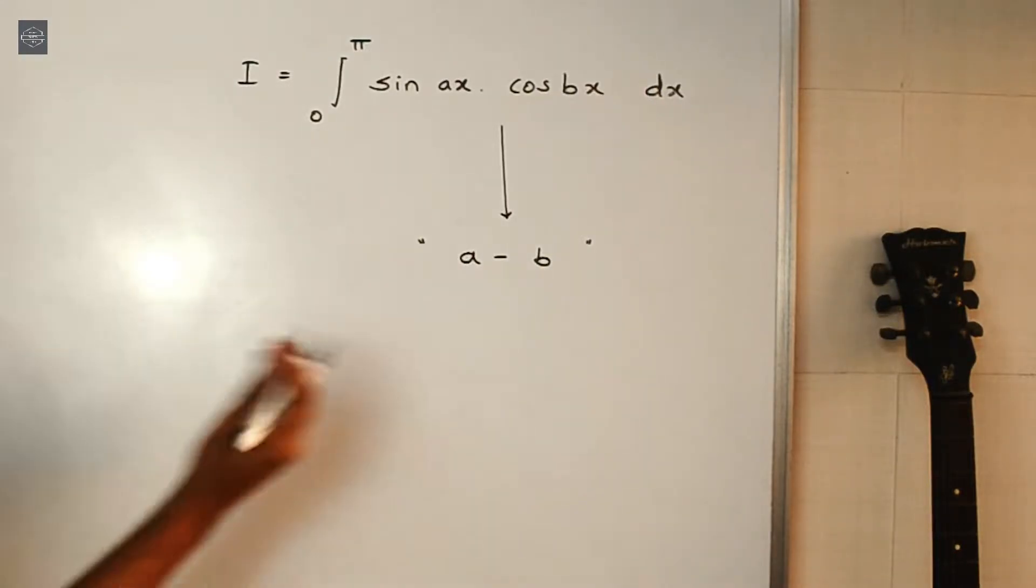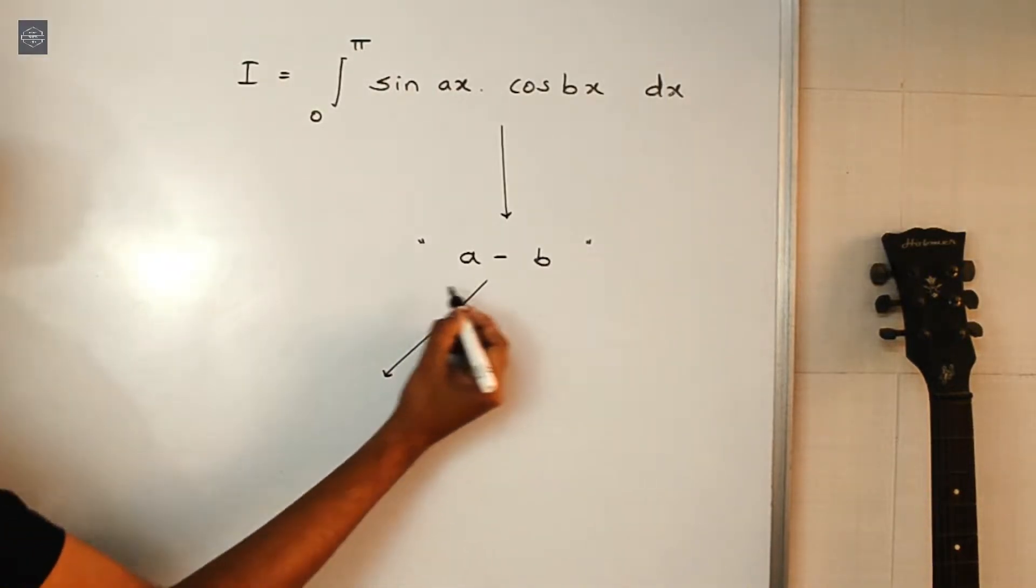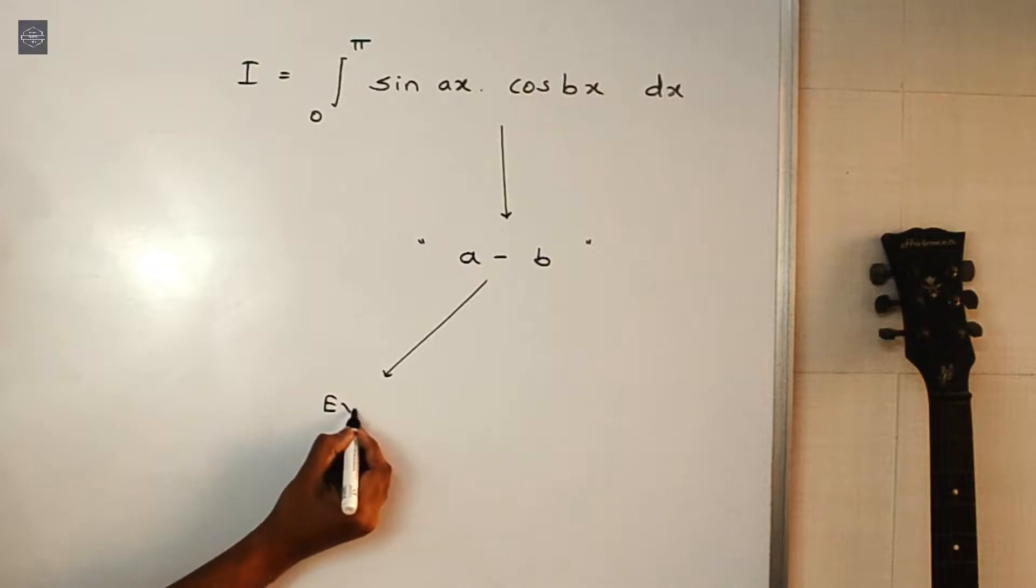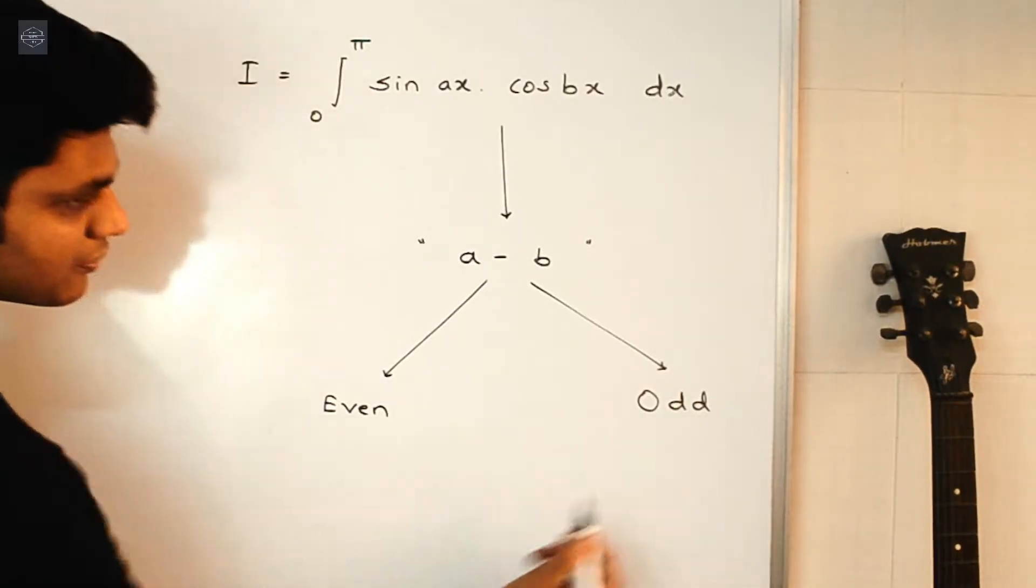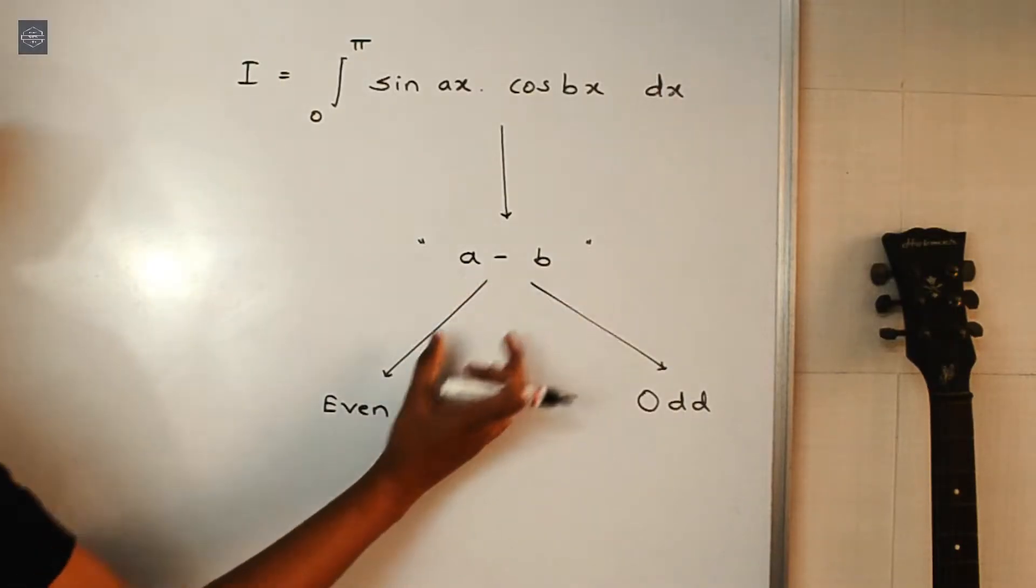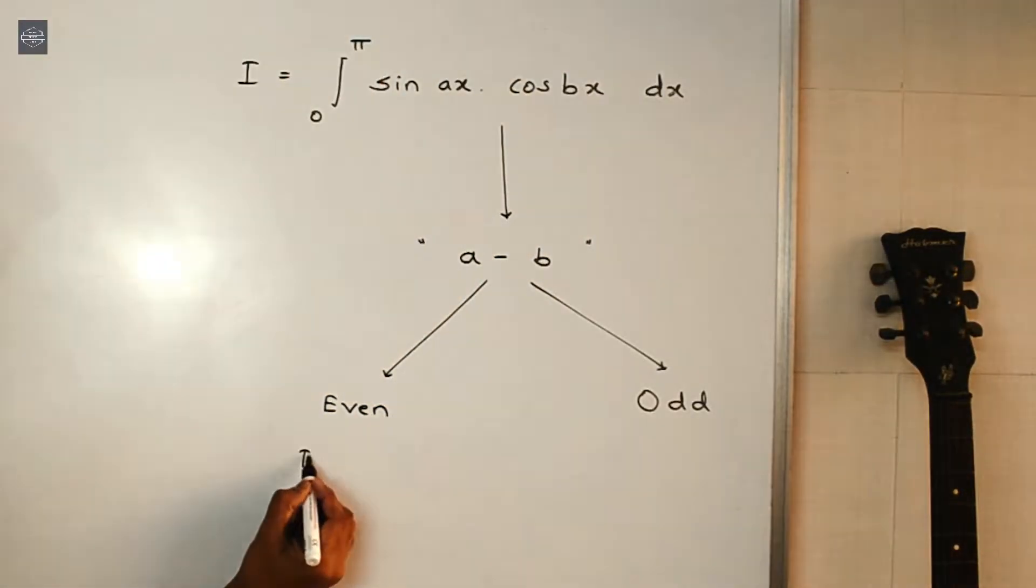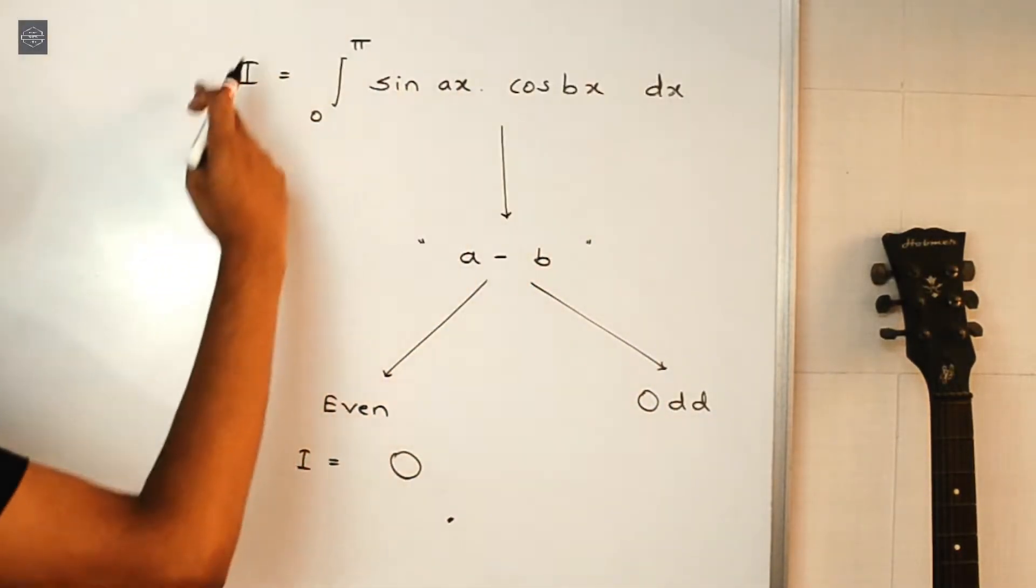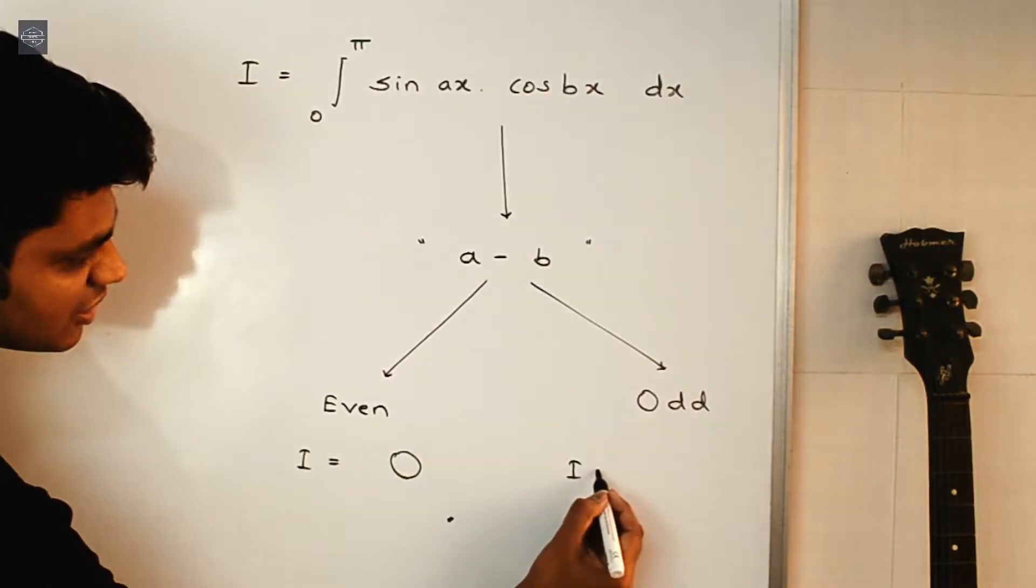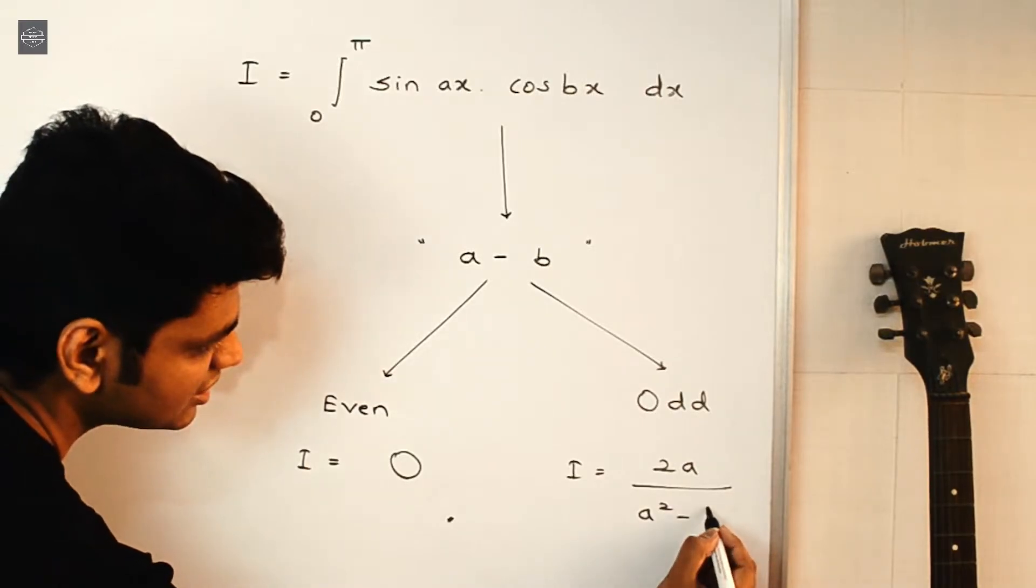And once you find the value of a-b, then you get two possibilities here. This number a-b, it will be an even number or it will be an odd number. So if this term's value is an even number, then the value of this entire integral, i, it will be equal to 0. And if the value of this term a-b is an odd number, then the value of this entire integral, it will be i is equal to 2a upon a square minus b square.